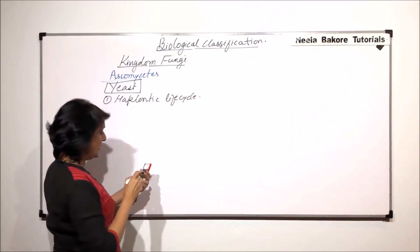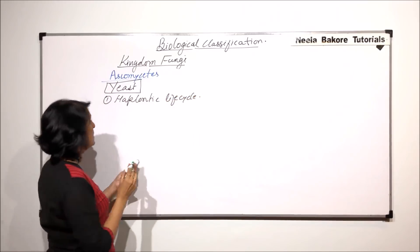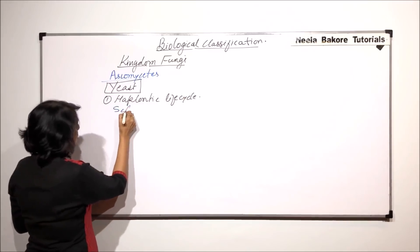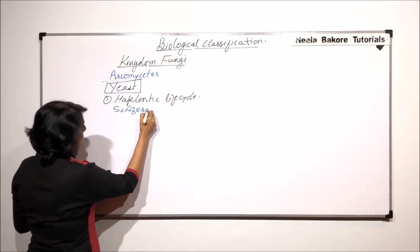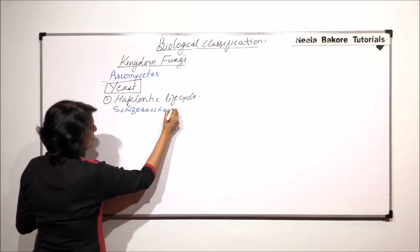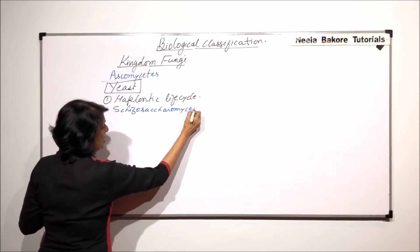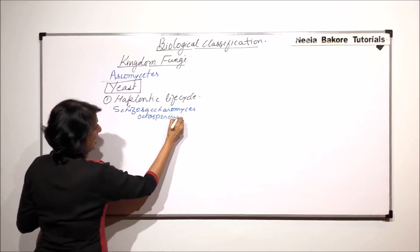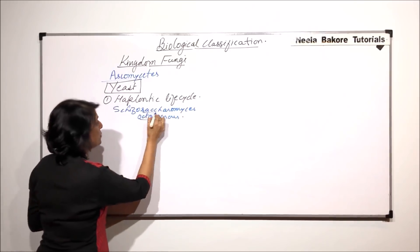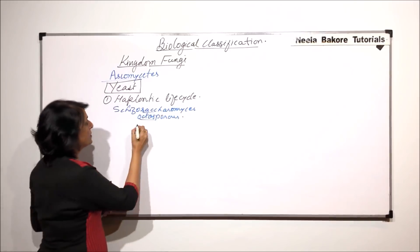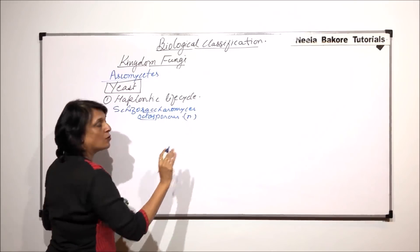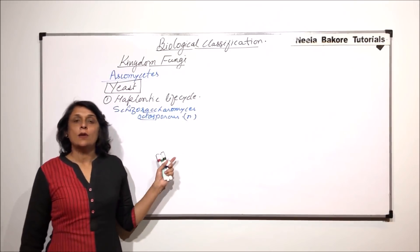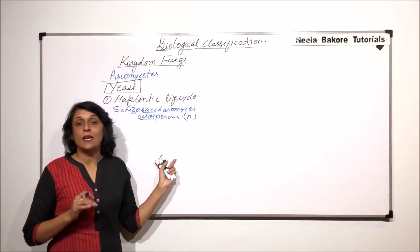This type of life cycle is seen in a species that is Schizosaccharomyces octosporus. In case of this particular species, the organisms are haploid. They are normally haploid and now let us see how they exhibit their life cycle.